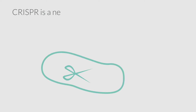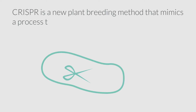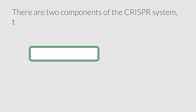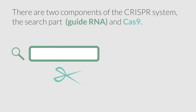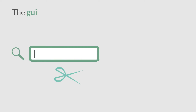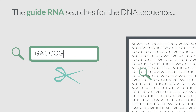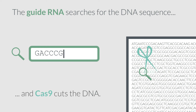CRISPR is a new plant breeding method that mimics a process that happens naturally in microbes. There are two components of the CRISPR system: the search part, guide RNA, and Cas9. The guide RNA searches for the DNA sequence, and Cas9 cuts the DNA.